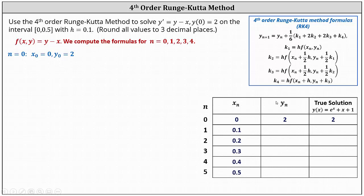Our first approximation will be y sub 1. When determining y sub 1, n is equal to 0. We need to calculate k sub 1 through k sub 4. k sub 1 is equal to h times f of x sub 0 comma y sub 0, where h is 0.1, x sub 0 is 0, y sub 0 is 2, and f of 0 comma 2 is 2 minus 0. Simplifying, we have k sub 1 equals 0.2.